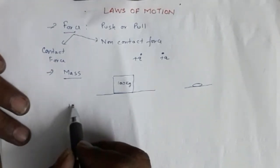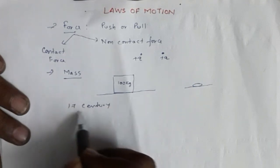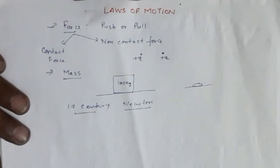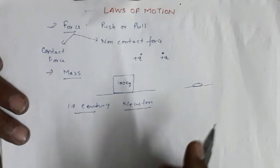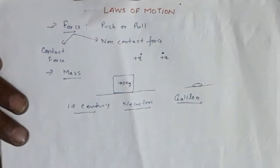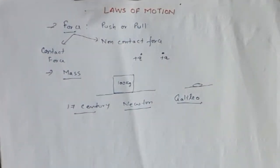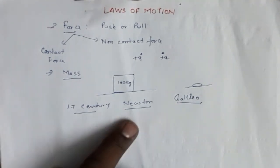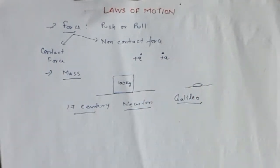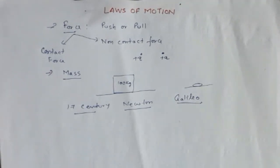In the 17th century, Newton developed these three laws of motion based on the work of Galileo. The primary work on the concept of laws of motion was done by Galileo, and Newton worked on Galileo's theory and gave the three laws of motion. These are the basic ideas you need before starting this chapter.